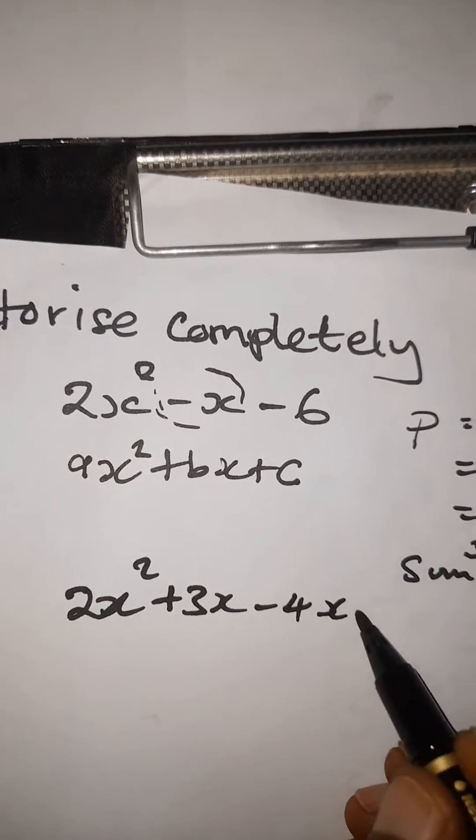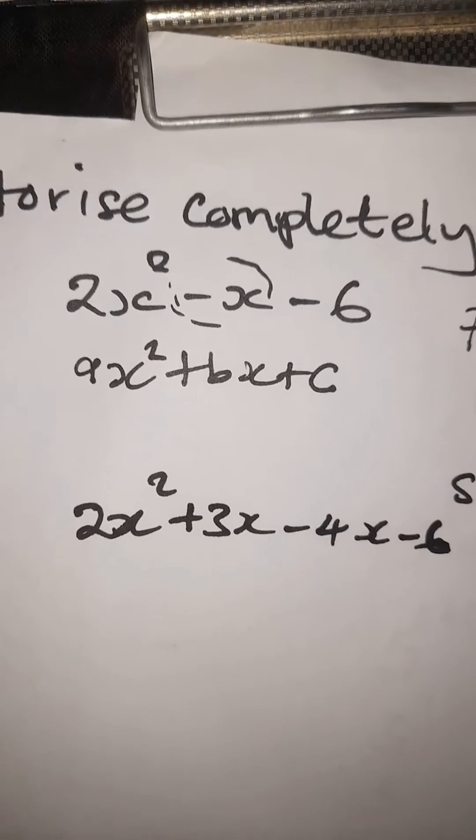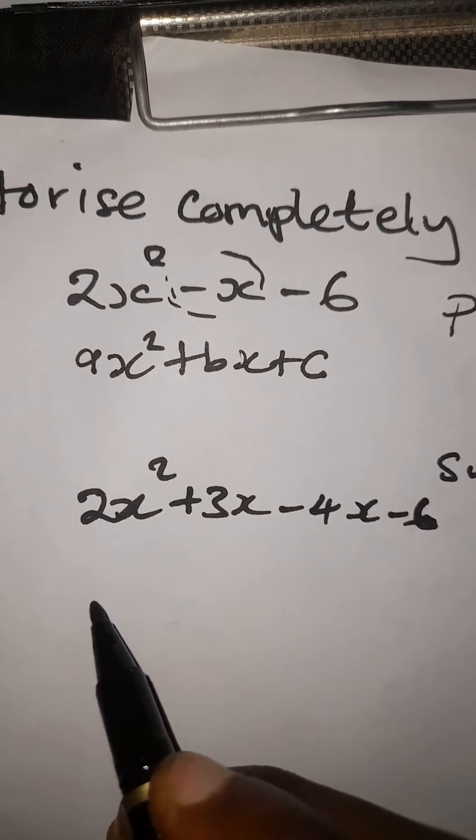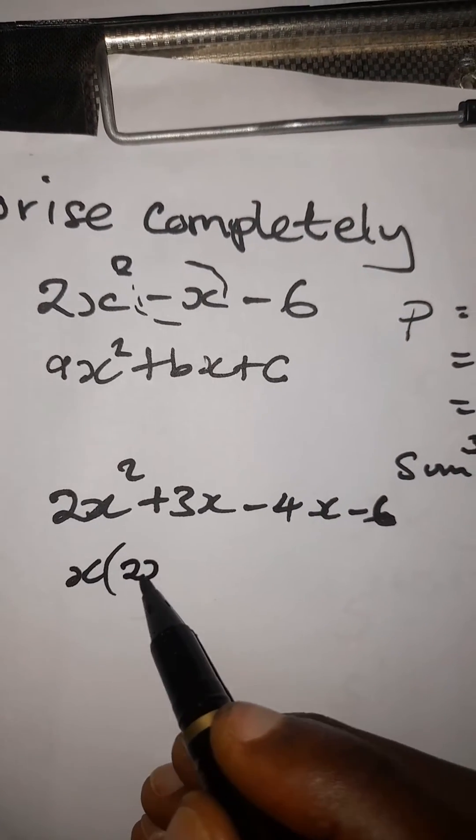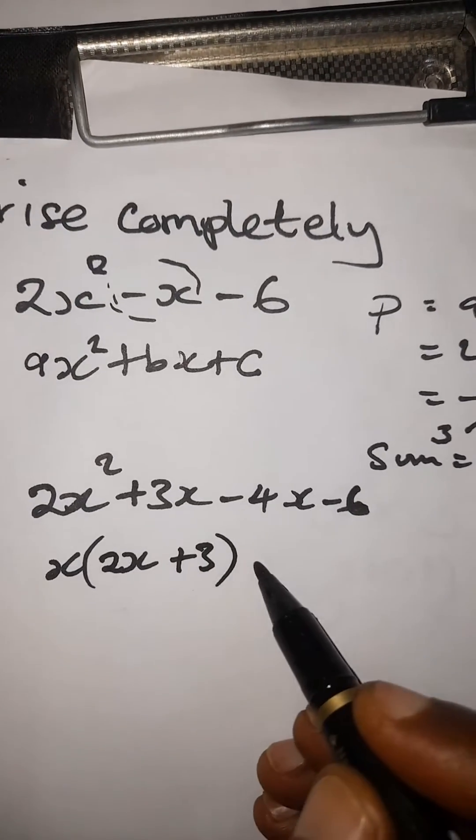We can factorize by grouping. The common factor here is x. x into 2x squared will be just 2x. x and x will cancel, leaving 3.